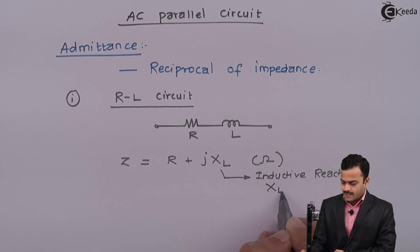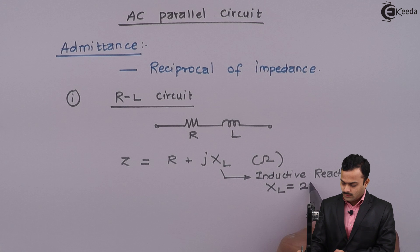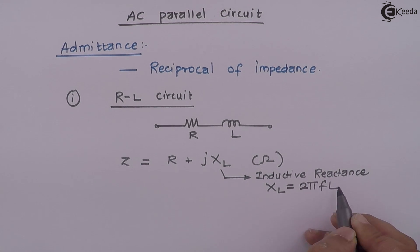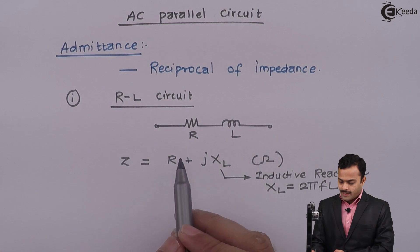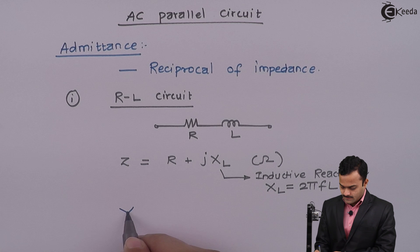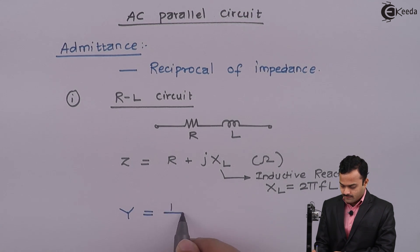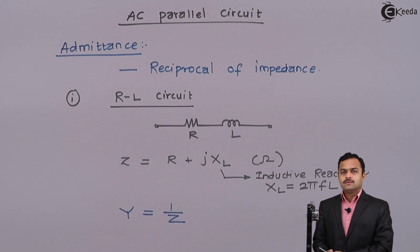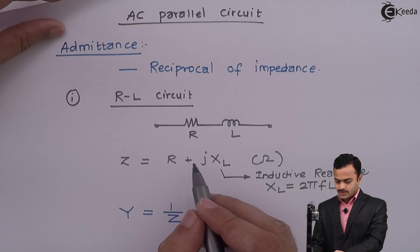It is related to L with this formula: XL = 2πfL. Now we need to find out the admittance. Admittance is denoted by Y, so it is the reciprocal of impedance. Y = 1/Z.